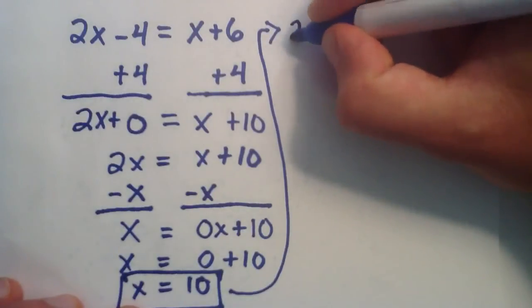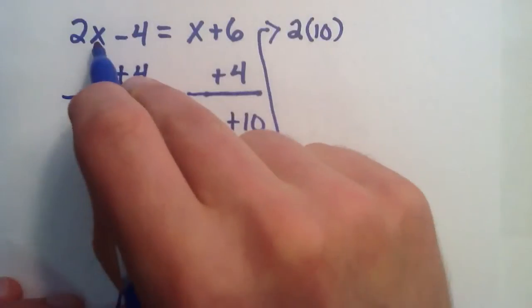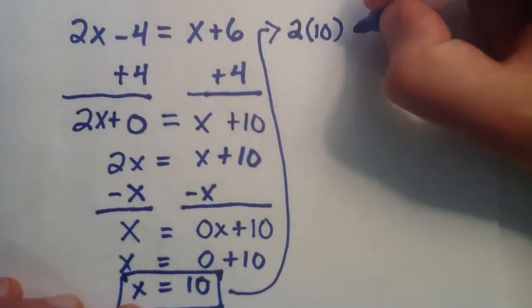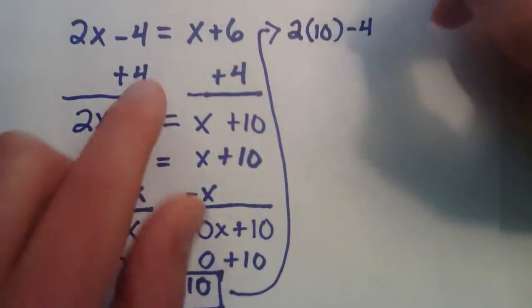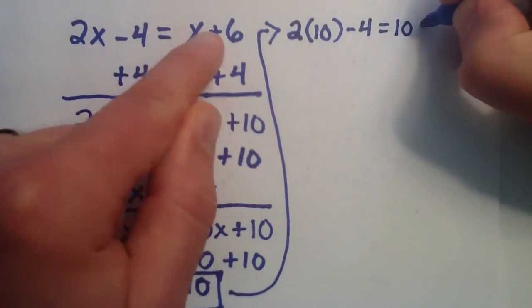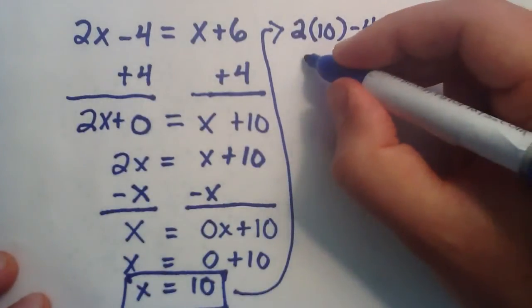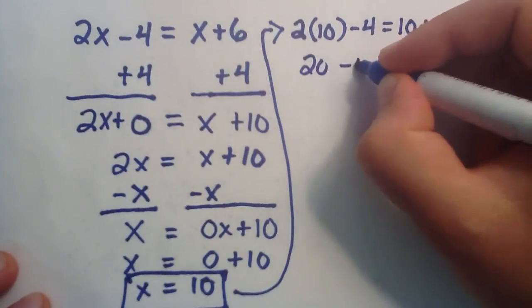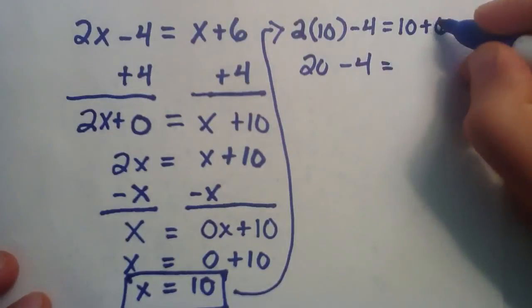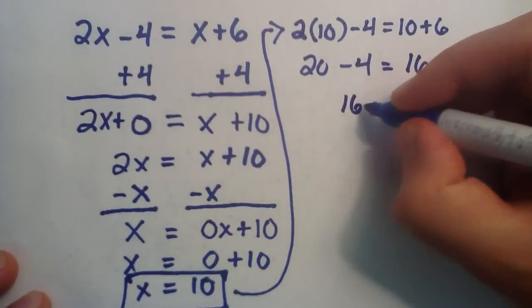So, instead of x, we're going to do 2 times 10. Because our x has a value of 10. And that's minus 4. And that should be equal to... Instead of x, we're placing the 10 plus 6. And 2 times 10 gives us 20. And that's minus the 4. And 10 plus 6 gives us 16. 20 minus 4 gives us 16.